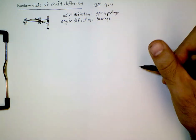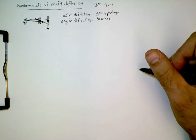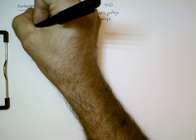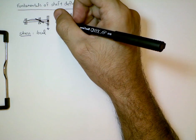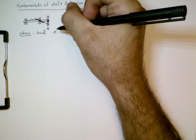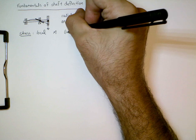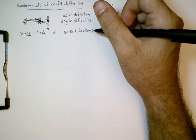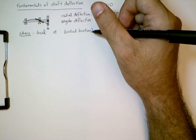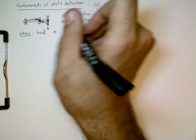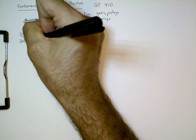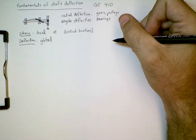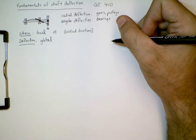Another important thing to understand is that with stress analysis, this was a very local phenomenon. We really only needed to know what the internal moment was at a particular point — we could focus on critical locations such as stress concentrations, grooves, or shoulders in the shaft, or points where the internal moment was really high. In contrast, deflection is really a global phenomenon. We'll see a bit more why this is the case as we go through these examples on shaft deflection.